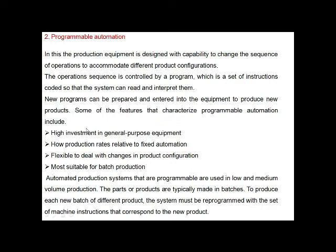In programmable automation, the production equipment is designed with the capability to change the sequence of operations to accommodate different product configurations. The operation sequence is controlled by a program — a set of instructions coded so that the system can read and interpret them. New programs can be prepared and entered into the equipment to produce new products. Automated production systems of this type are used in low and medium volume production, where parts or products are typically made in batches. To produce each new batch, the system must be reprogrammed with a set of instructions corresponding to the new product.